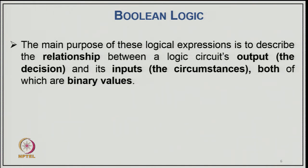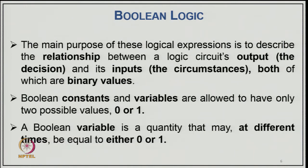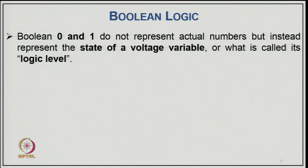The main purpose of Boolean logical expressions is to describe the relationship between a logic circuit's output and its input, both of which are binary values 1 and 0. Boolean constants and variables are allowed to have two possible values, 0 and 1. Boolean 0 and 1 do not represent actual numbers but instead represent the high or low state of a voltage variable, called its logic level.